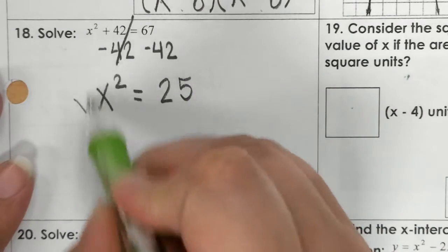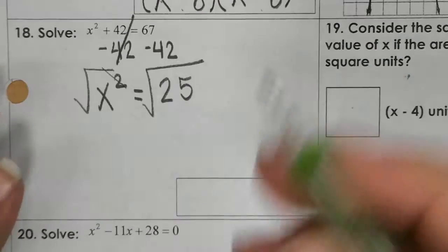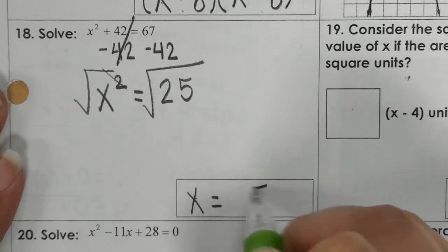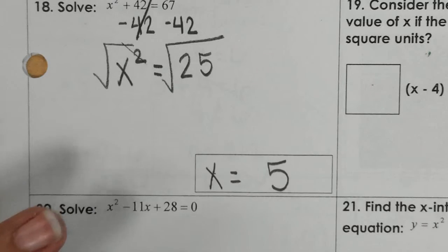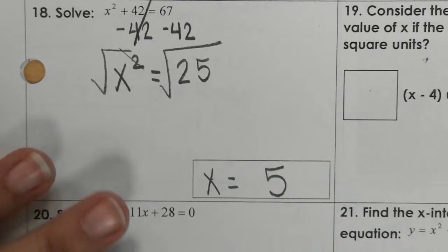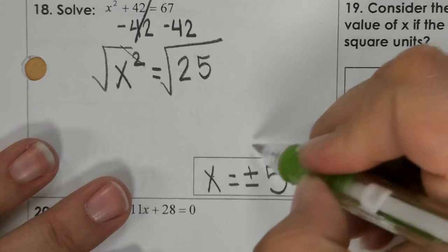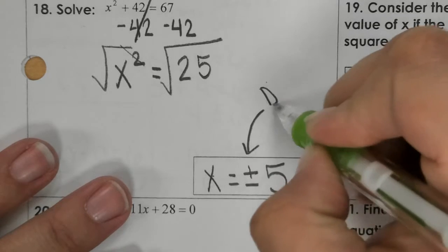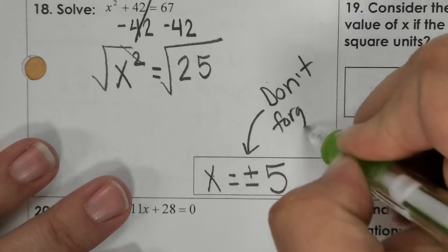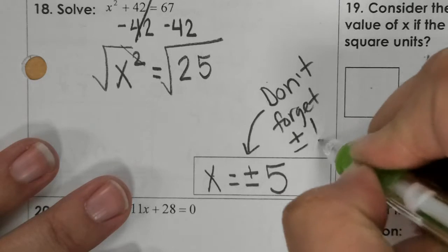Then I would square root both sides. If you put this as your answer or select this as your answer, it would be wrong because you have to have plus or minus. Don't forget plus and minus.